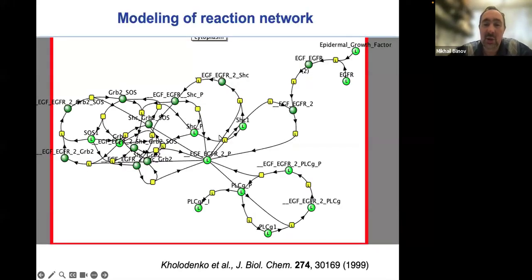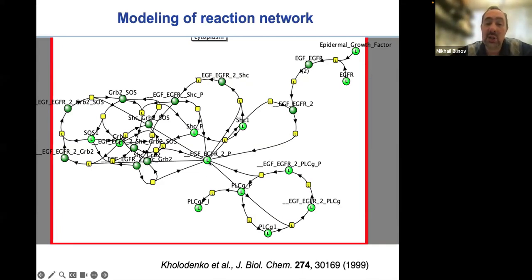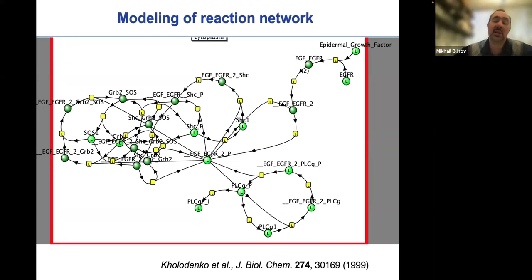Today you saw either a list of reactions or a graphical visualization of a reaction network that looked like species connected through reaction nodes. Every such species corresponded to a variable, and eventually you would solve the system of differential equations for all those variables or do stochastic simulations and find the set of individual time courses. Unfortunately, this is a huge simplification.